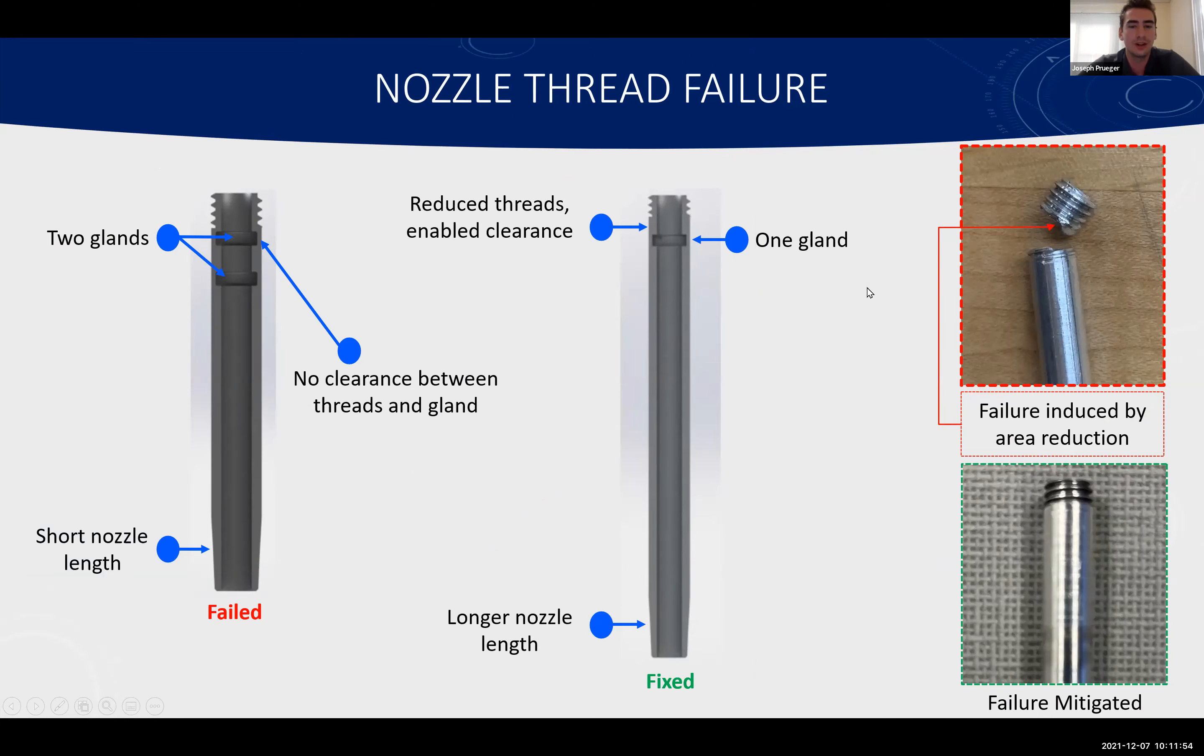Moving on from our ejector mechanism, we actually had a failure that occurred between our nozzle and threads. As you can see in the top right corner, failure was induced by the area reduction that occurred in our design sequence. Initially we designed with two o-ring glands and five threads of engagement. However, this caused no clearance between the threads and the gland, which meant that the wall thickness at that point was super thin. And so that actually caused it to fail in shear when we were threading our nozzle into our base plate.